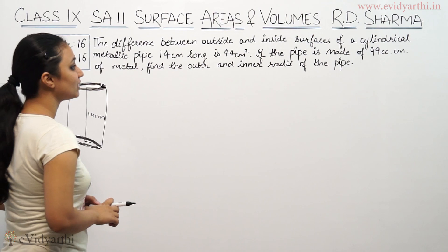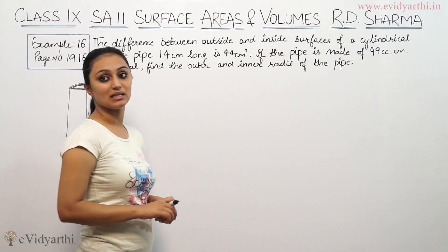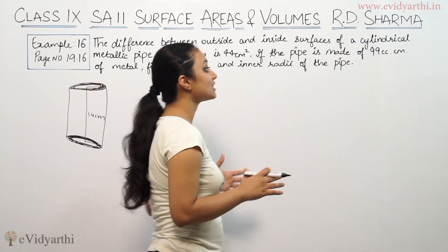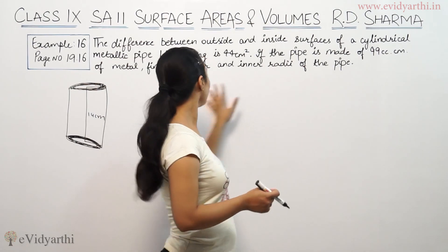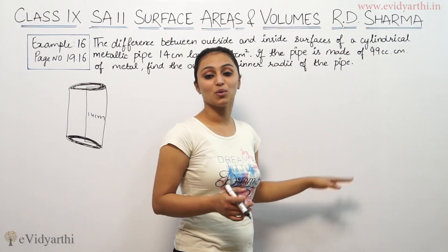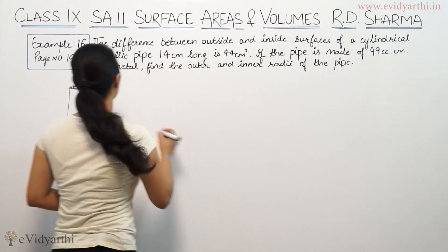The pipe is made up of 99 cubic cm of metal. Cubic cm is given and that means if something is in cubic units, it means its volume is given. So find the outer and inner radius of the pipe.